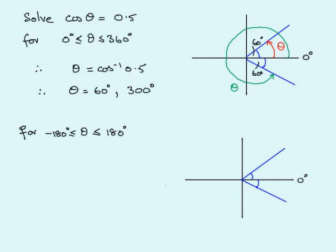The values of theta always start from 0 degrees. Turning anti-clockwise takes us through 90, 180, 270, 360. Staying in the range minus 180 to 180, I can turn to the first quadrant line — clearly less than 180 — but going all the way to 300 degrees goes beyond 180, which is not allowed in this range.